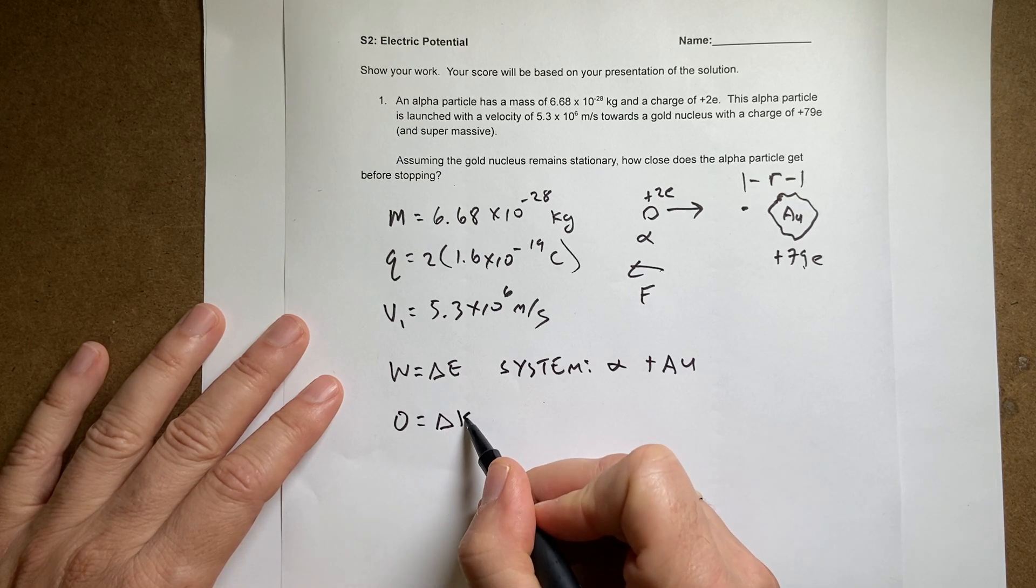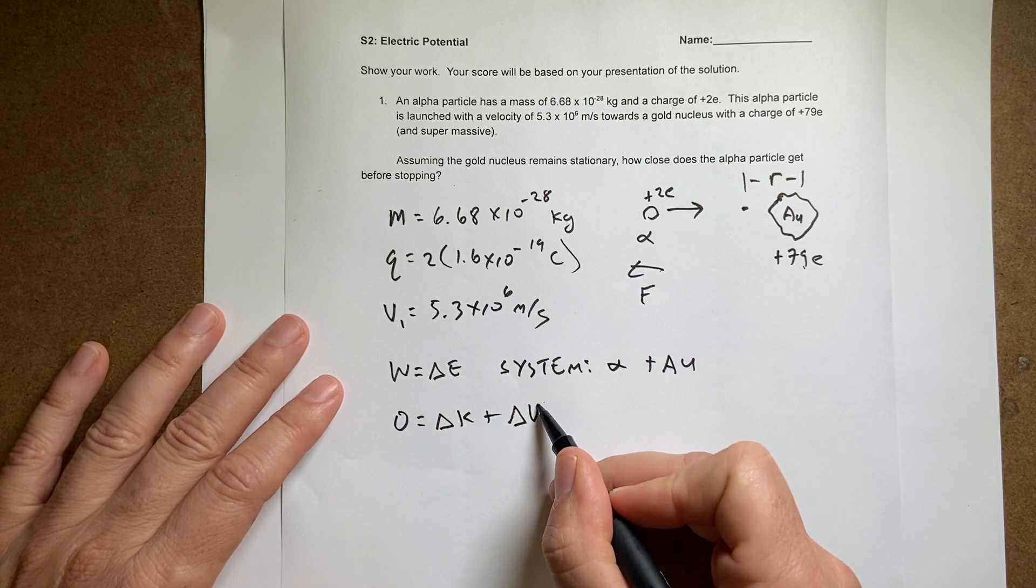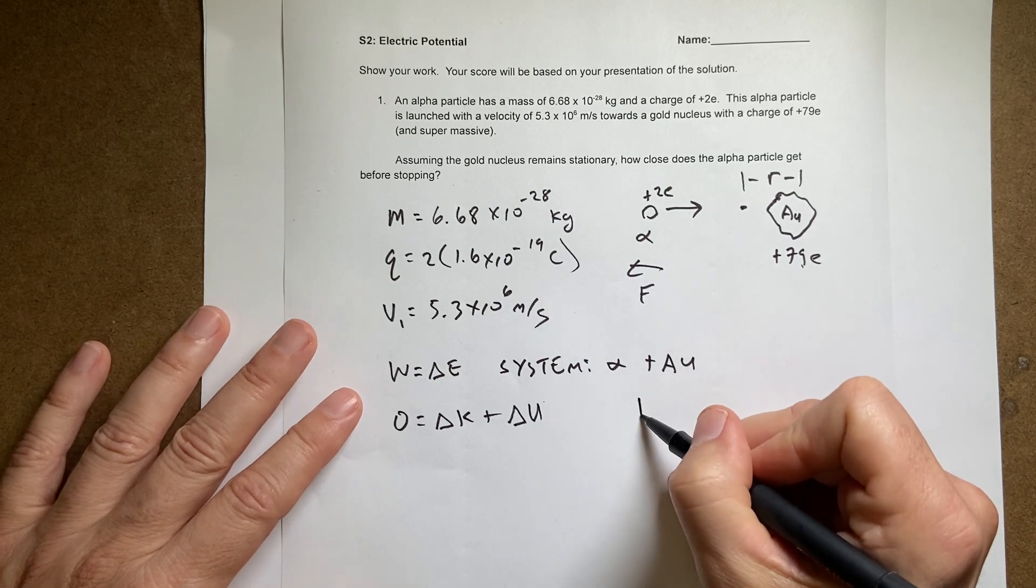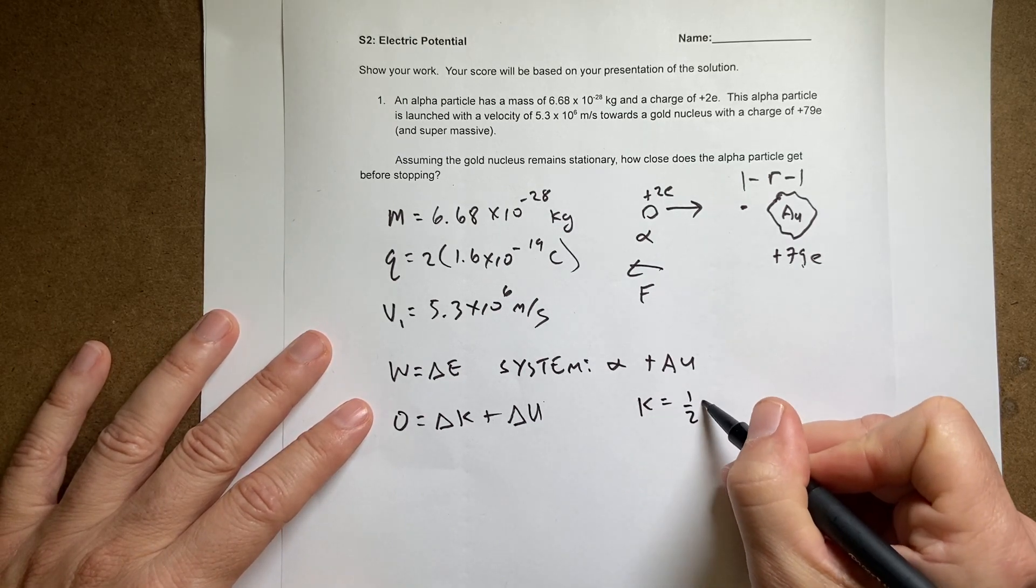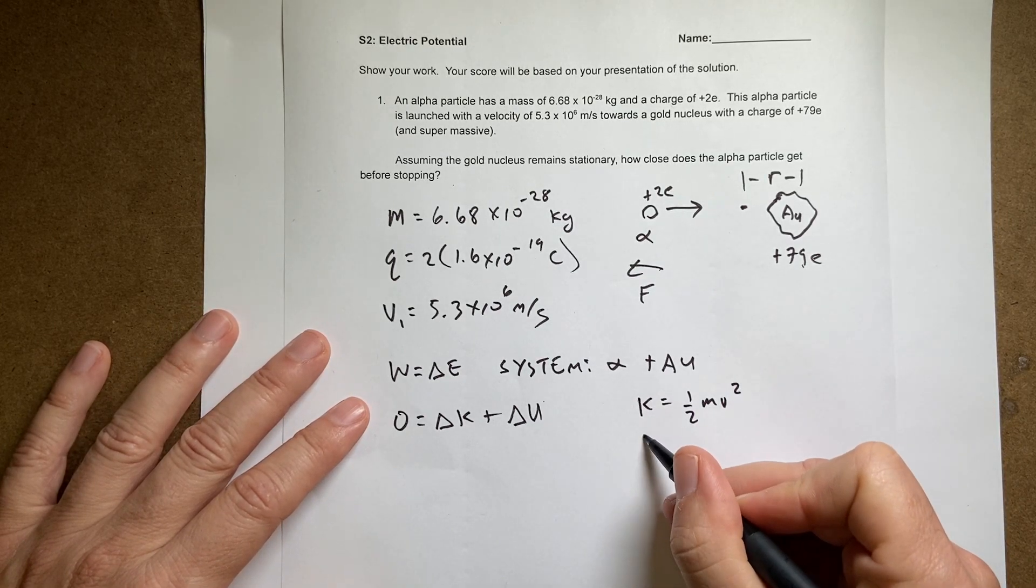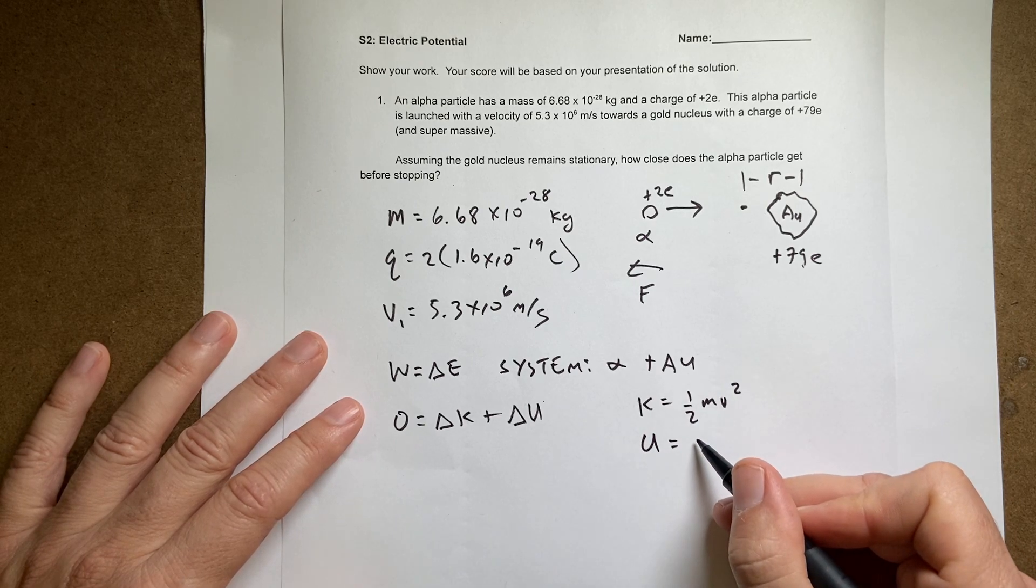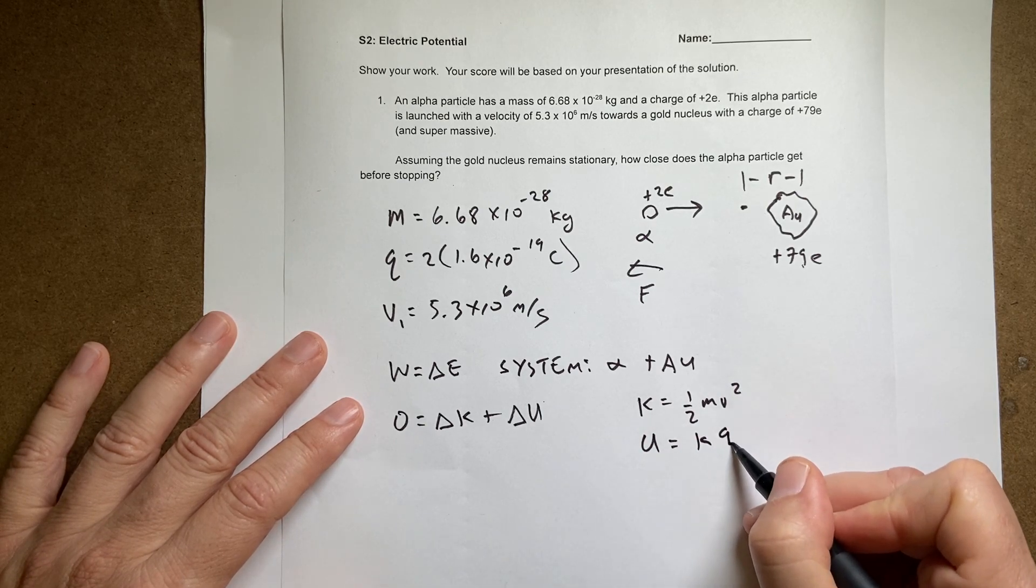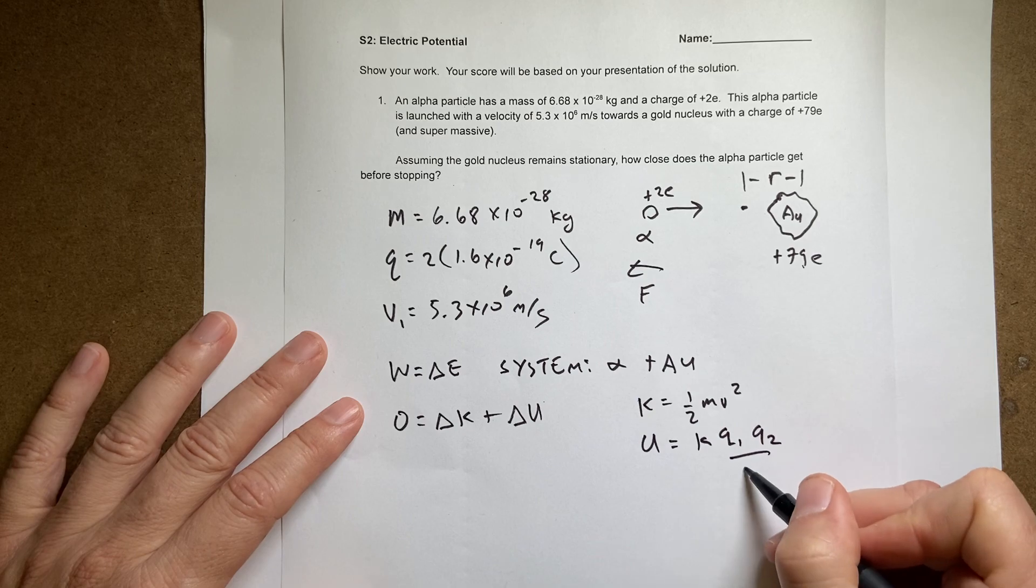Change in kinetic energy plus change in electric potential energy, where kinetic energy is one half mv squared and the potential energy is k q1 q2 over r.